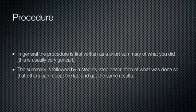The next step in the scientific method is the procedure. In general, the procedure can be broken up into two parts. One is a very brief part, which is the first one. So in general, the procedure is first written as a short summary of what you did or what you're going to do. This is usually very general. The second part is going to be a summary that's followed by a step-by-step process or a step-by-step description of what you did. So you tell us exactly how you did it, when you did it, so that other people who are trying to repeat the experiment can do so and get the same results that you did. And I notice I misspelled the word there, general. I apologize for that.